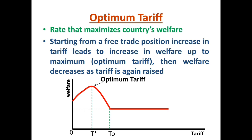Looking at the concept of optimum tariff — optimum tariff is a rate of tariff that maximizes a country's welfare. As you can see in the figure, when tariff rate is zero there is no tariff, which we call free trade. When tariff rate increases, welfare also increases. And when welfare reaches its maximum, that rate of tariff is known as the optimum tariff. In the figure, T* is the optimum tariff because it maximizes the welfare of the country.